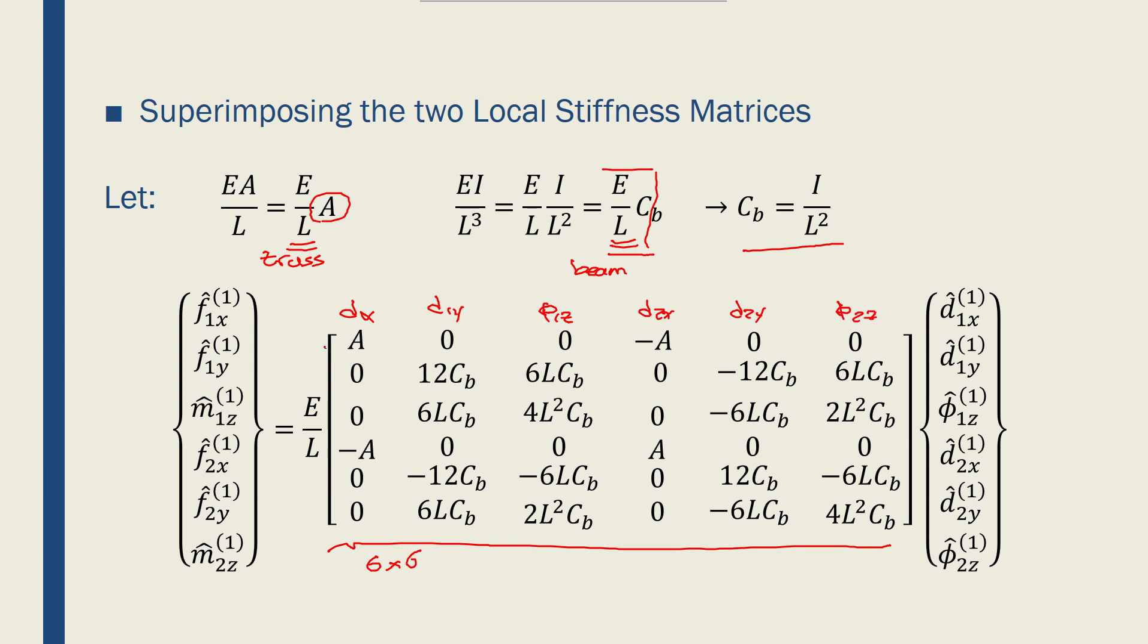and so this row, this row, this column, and this column are filled by the elements from the local stiffness matrix of a truss, and the other rows and columns are filled by the elements from the local stiffness matrix of the beam. So, we found the stiffness matrix for a typical frame element.